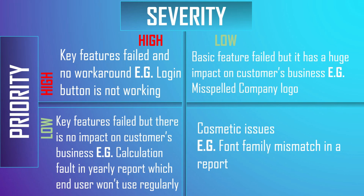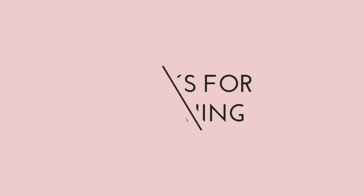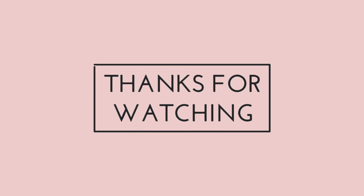Low severity and low priority: in some systems there will be cosmetic issues such as inconsistency of font or font size. An important point to mention — the development team takes up high priority defects first rather than high severity ones. Generally, severity is assigned by testers or the test lead, and priority is assigned by the developer team lead or project lead. That's it for this video, I hope you liked it.